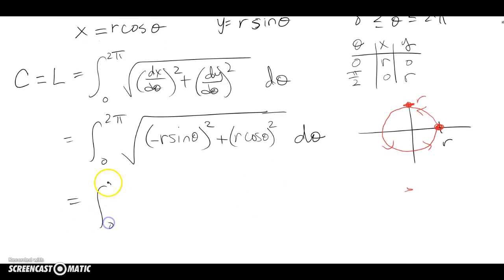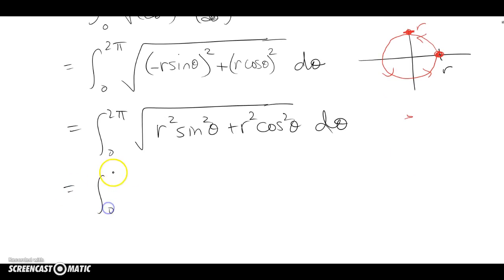Then I do some simplification and I end up with 0 to 2π, r squared sine squared theta plus r squared cosine squared theta dθ. That's going to give me an r squared that they both have in common.